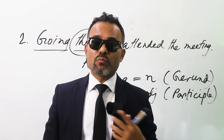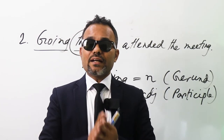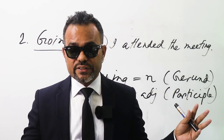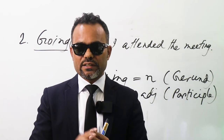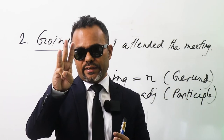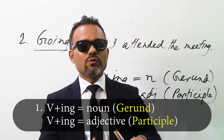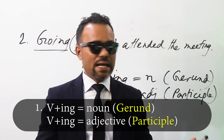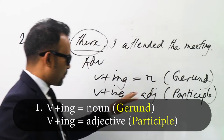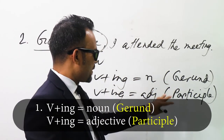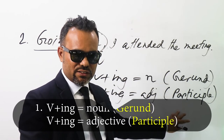So what I wanted to say is that we can identify or differentiate between gerund and participle using three conditions. That is: verb plus -ing, if it becomes a noun, then it will be a gerund. Verb plus -ing, if it becomes an adjective, then it will be participle.